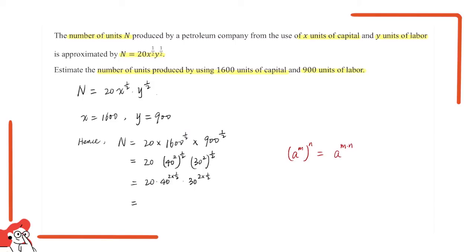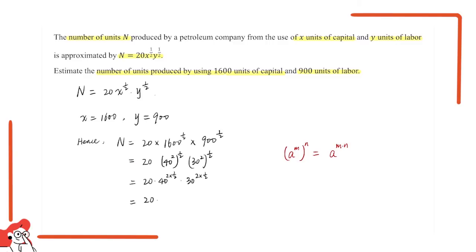And keep simplifying the expression, we would get 20 times 40, because the power of 2 times 1/2 equals 1. And similarly, times 30. Therefore, we could easily calculate the total number of units, n, which is 24,000. So that would be the final answer.